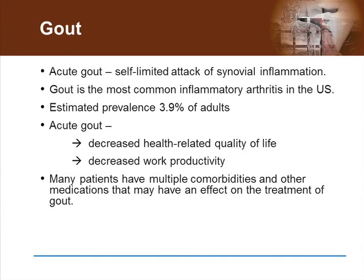Considered the most common inflammatory arthritis in the U.S., with an estimated prevalence of 3.9%, gout has a major negative impact on quality of life and work productivity. Gout management can be particularly challenging in many patients who present with comorbidities such as diabetes, hypertension, and cardiovascular disease. These conditions, as well as the long list of medications usually taken by these patients, frequently have an effect on the treatment choices for gout.